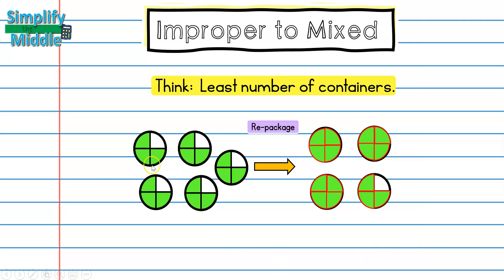So what this means is that I have 15 fourths - 15 pieces that are cut into fourths - and that is going to convert into three whole and three fourths. So let's look at this in terms of numbers.